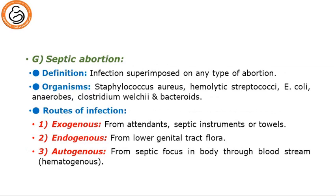Septic abortion is defined as infection superimposed on any type of abortion. The causative organisms include Staphylococcus aureus, hemolytic streptococci, E. coli, Clostridium welchii — the dangerous one — and bacteroids. Routes of infection are either exogenous from attendants, septic instruments or towels during manipulation; endogenous from the lower genital tract flora which becomes pathogenic; or autogenous or hematogenous where infection spreads from a septic focus anywhere in the body through the bloodstream.